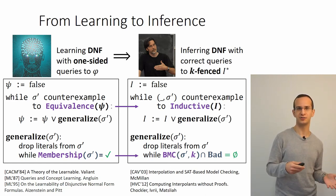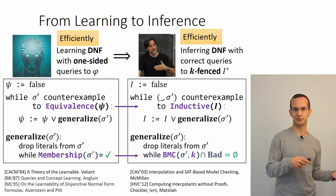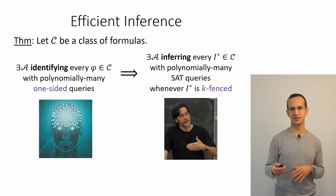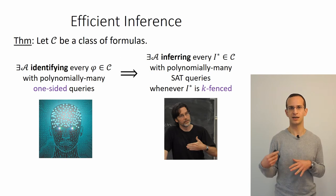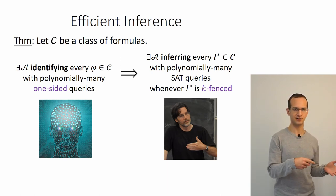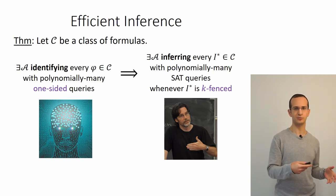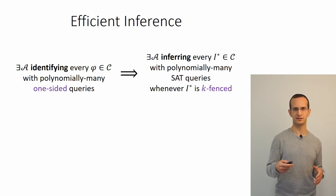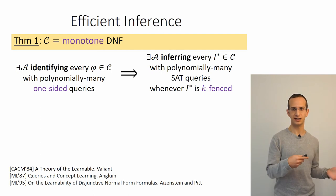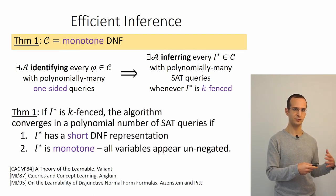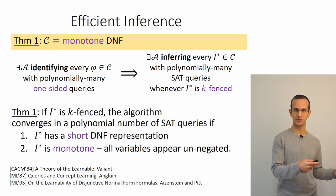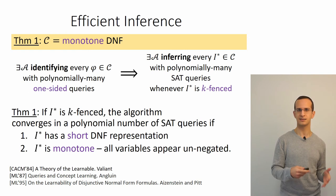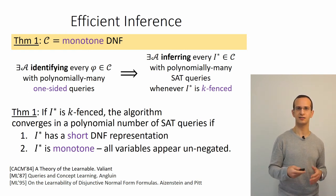Because we can obtain complexity results from the learning algorithm, we get the theorem that if there's an exact learning algorithm that efficiently identifies every formula from some class in a polynomial number of one-sided queries, then there exists an invariant inference algorithm that successfully infers every k-fenced invariant from that class in a polynomial number of SAT calls. Applying this to the DNF learning algorithm, we get that the model-based interpolation-based algorithm successfully infers an invariant in a polynomial number of SAT calls whenever there exists a k-fenced invariant with a short monotone DNF representation—where all variables appear positively.